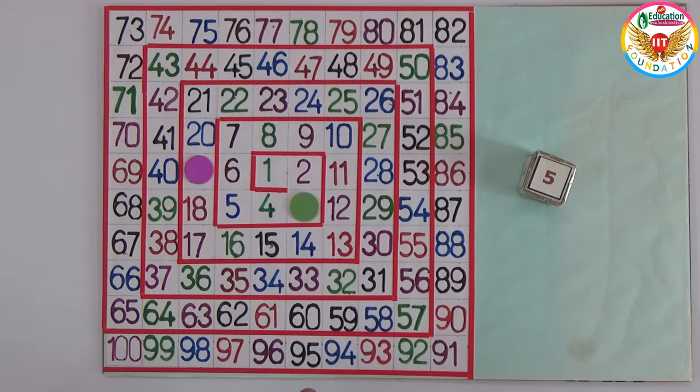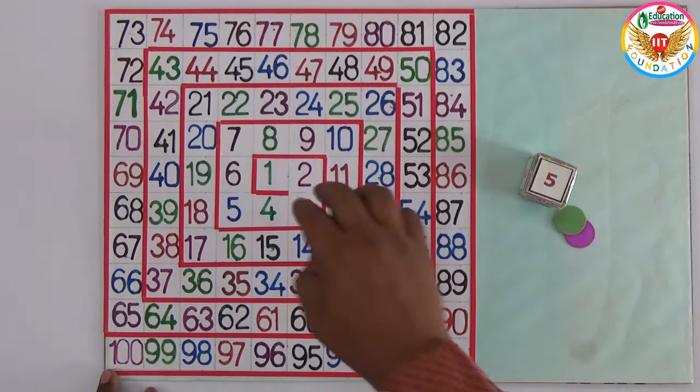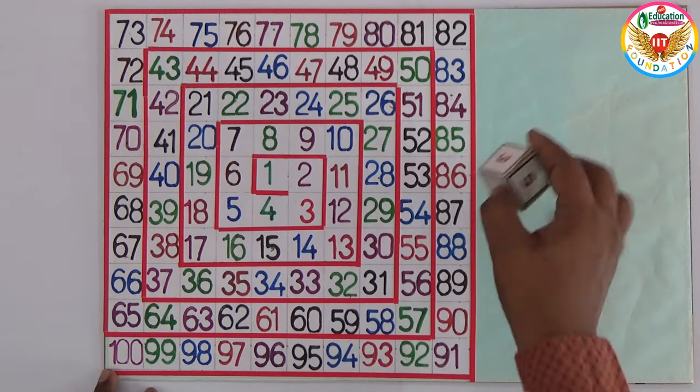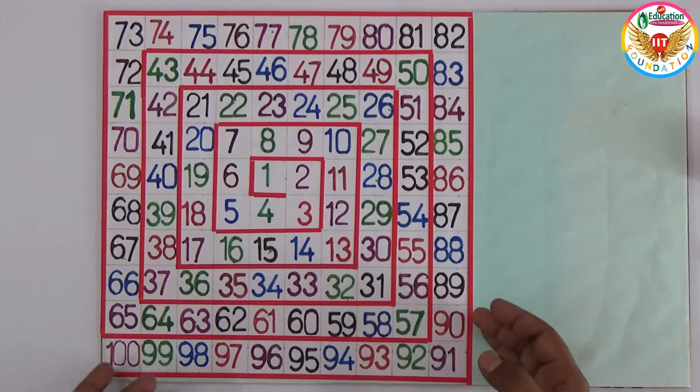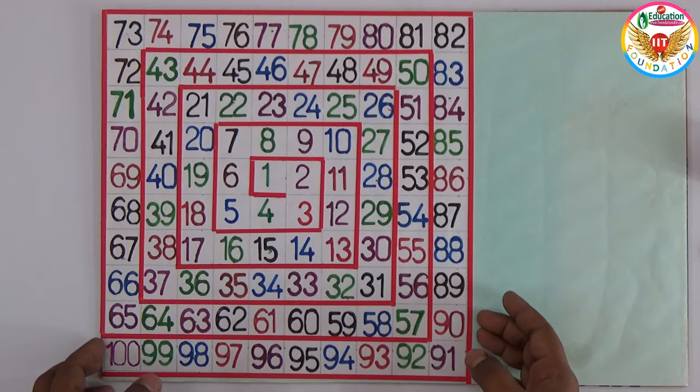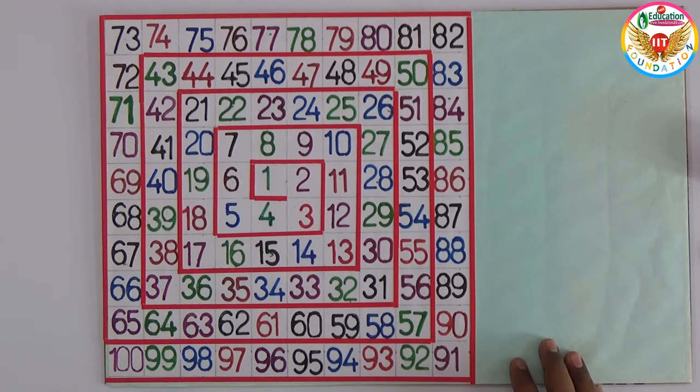You only need a dice and can arrange the numbers this way and play with multiples of any numbers, factors, even numbers, or even prime numbers. When you get a prime number, you play again. This means children can understand different situations while playing.